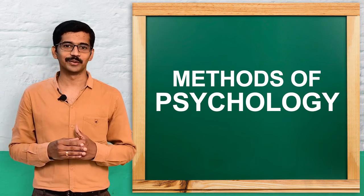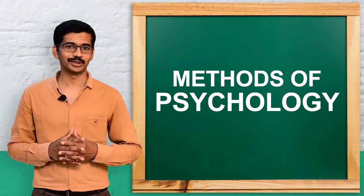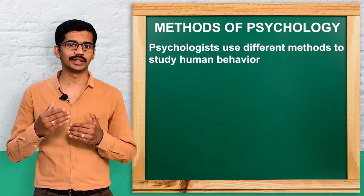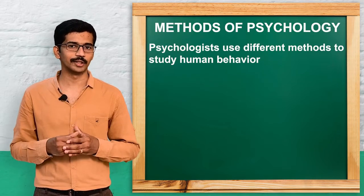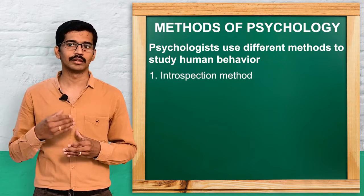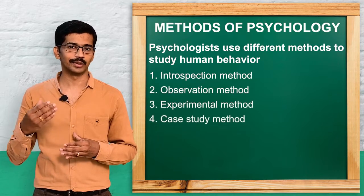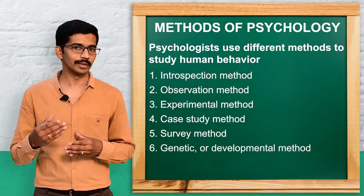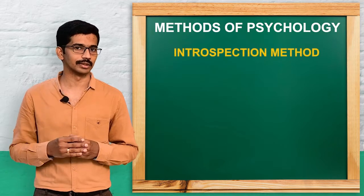Hi everyone. In this video we are going to see an important topic from psychology — the methods of psychology. Psychologists use different methods to study human behavior or cognitive processes. The methods are: introspection, observation, experimental method, case history or case study method, survey method, and genetic or developmental method. We will see them one by one, starting with the introspection method.